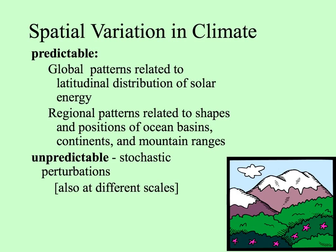Within spatial variation, we have predictable and unpredictable variation. Because of the way the Earth is positioned and turns, the distribution of solar energy makes the seasons change. The surface of the Earth sticks up or is concave in different places, further altering the range in temperature and precipitation. And then there are random, stochastic disturbances that provide unpredictable variation.